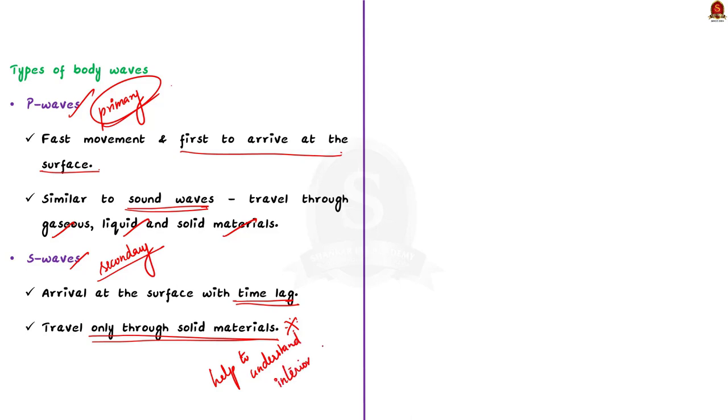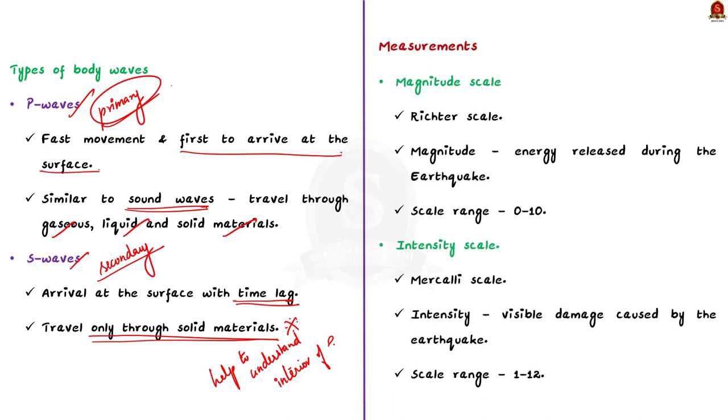Now, finally, let us see how earthquakes are measured. Earthquake events are measured using two scales. They are magnitude scale and intensity scale. The magnitude scale is known as the Richter scale. Here, the magnitude relates to the energy released during the earthquake. In Richter scale, the magnitude is expressed in absolute numbers that is from 0 to 10.